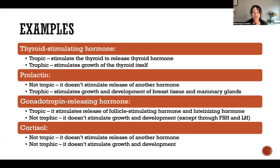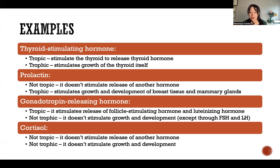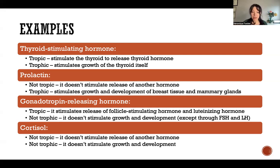Gonadotropin releasing hormone is an example of a hormone that is tropic but not trophic. It's tropic because it stimulates release of FSH and LH, but it's not trophic because it doesn't directly stimulate growth and development. It does stimulate growth and development in the sense that it stimulates release of FSH and LH, which both stimulate growth and development, but gonadotropin releasing hormone itself does not directly stimulate growth and development. Therefore it is not trophic — it's tropic because it causes release of FSH and LH, and those hormones are both trophic.